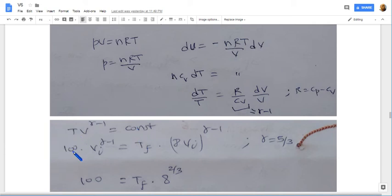So initial temperature is 100, initial volume Vi, final temperature Tf, and final volume is 8 times initial volume. And since it is a monoatomic gas, the value of gamma is 5/3.